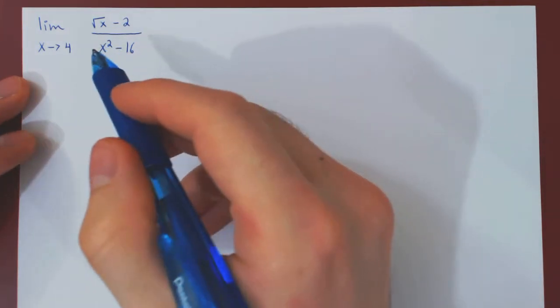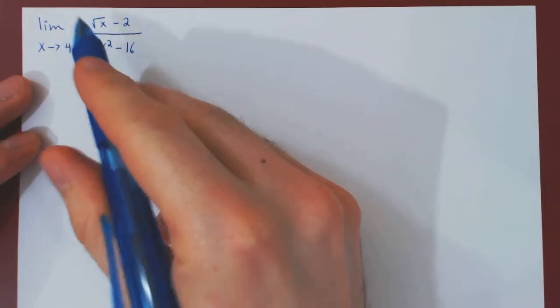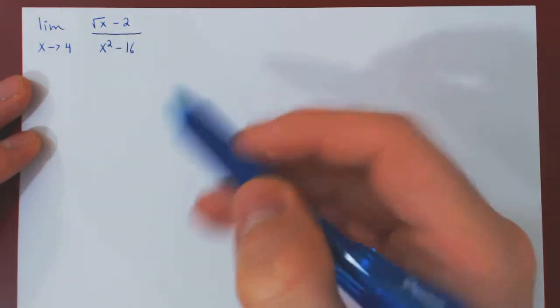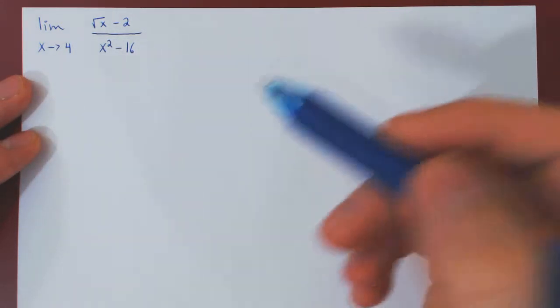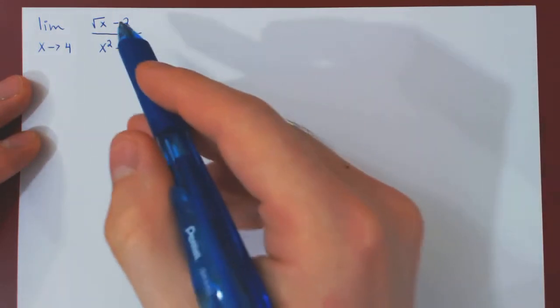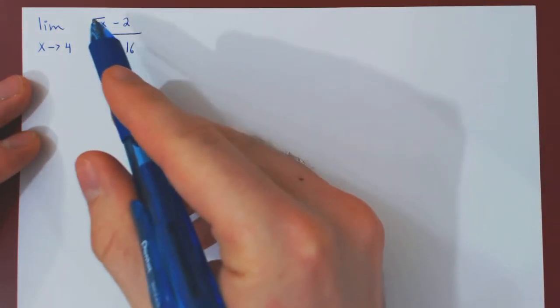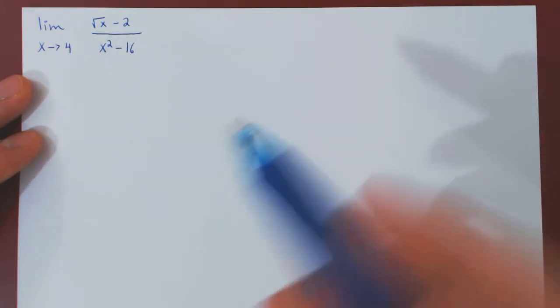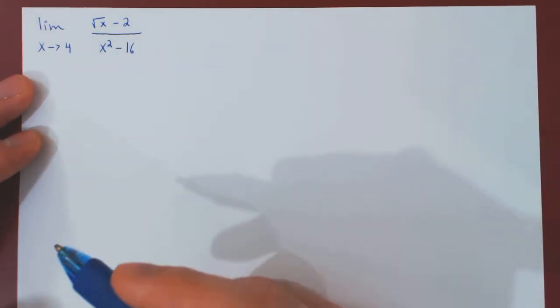In this video, we will find the following limit using first the method of conjugation, as we have a difference involving a square root, and second using L'Hôpital's rule.